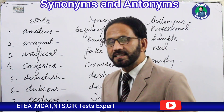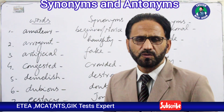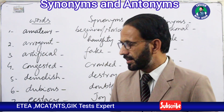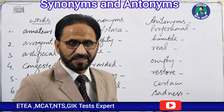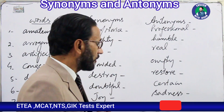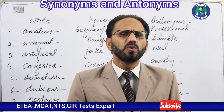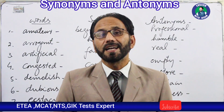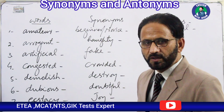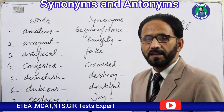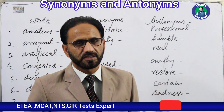Word number seven is 'ecstasy' — a very good word especially used in poetry and poetic language. The meaning of this word is happiness or joy. The synonym for ecstasy is joy, happiness, or pleasure, and the antonym may be sadness, gloom, or sorrow — all these words can be the antonym for ecstasy.